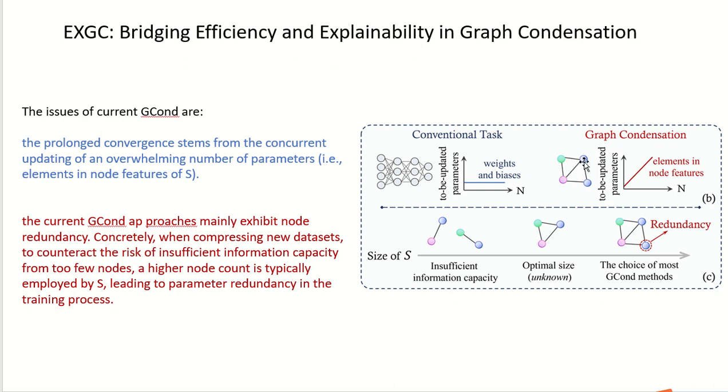That is, since Graph Condensation aims to generate a small graph, all the node features in this graph are to be updated parameters.